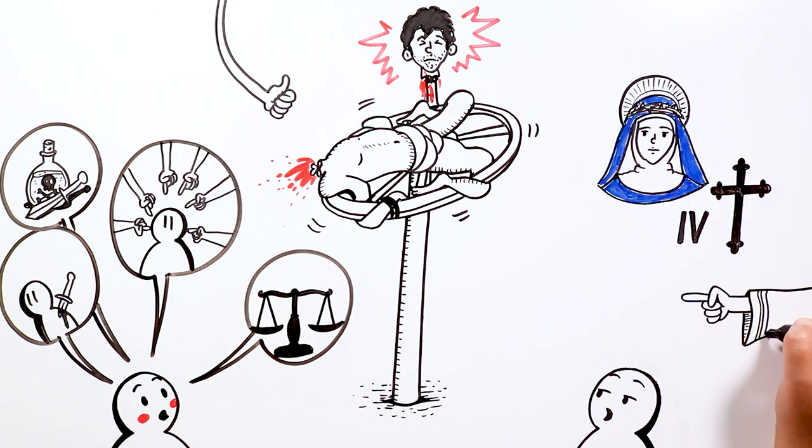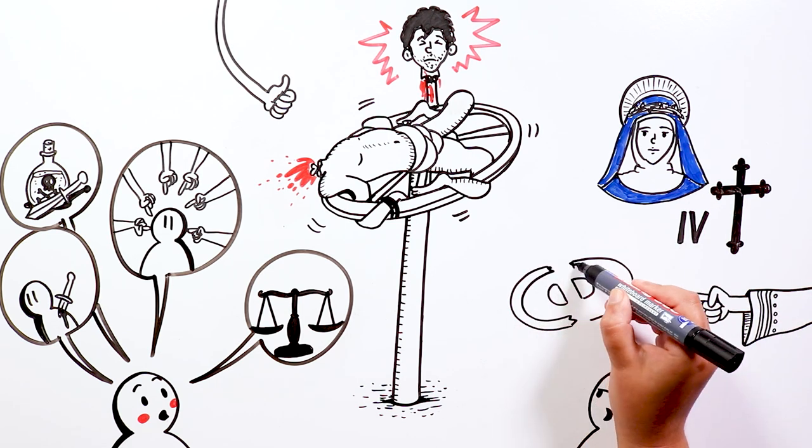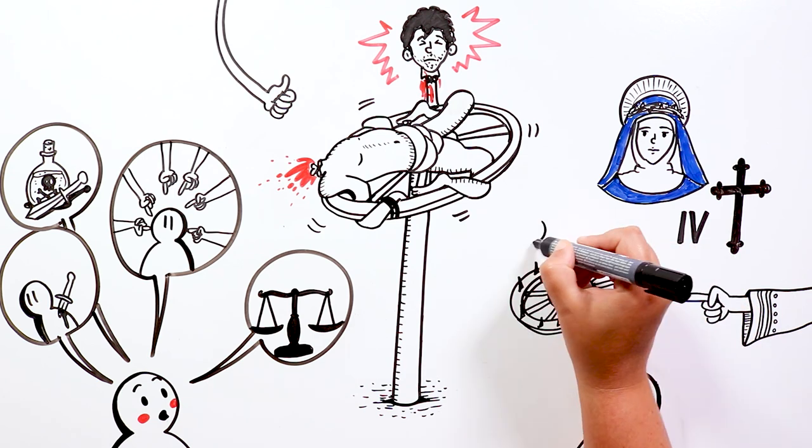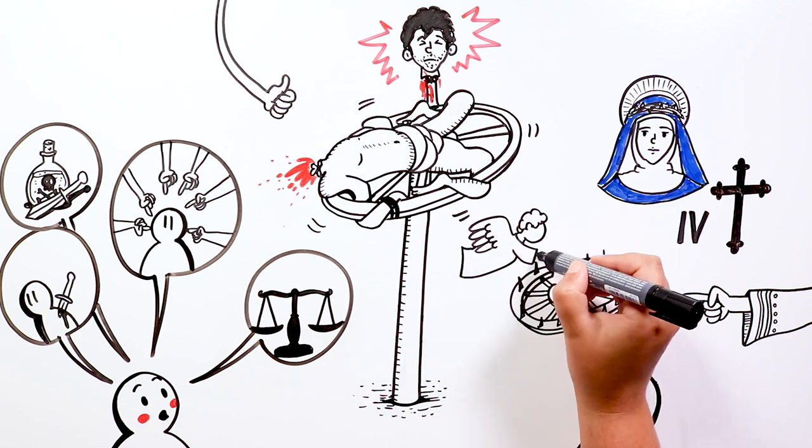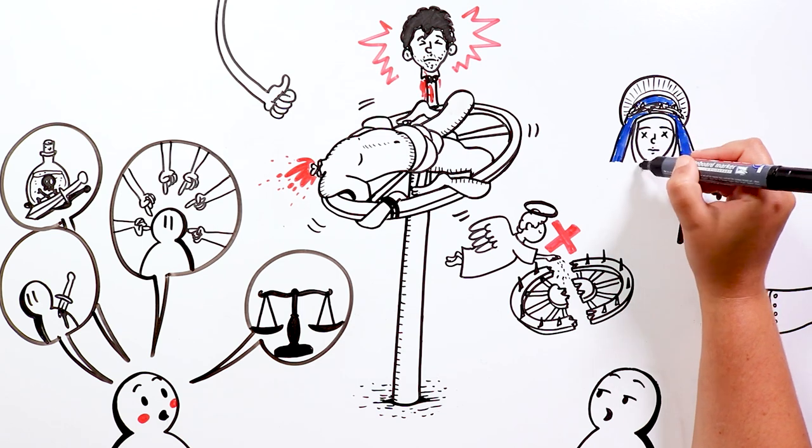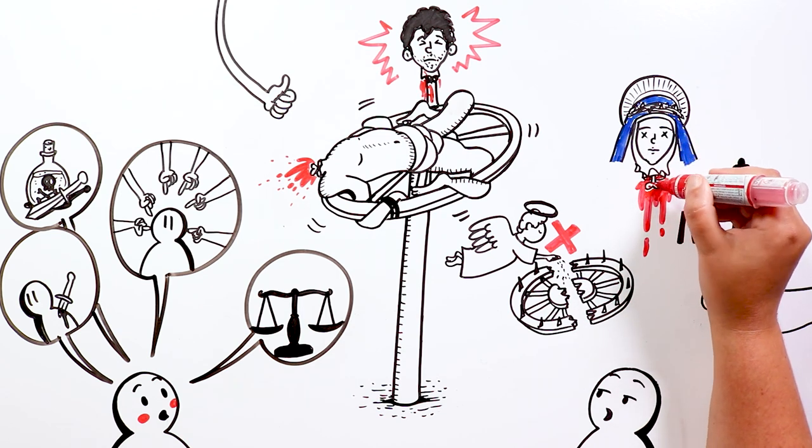But when Catherine's body touched the wood, the wheel broke. Some say that it was the angels who tore it to pieces. Unfortunately, this didn't prevent the emperor from ordering her head cut off.